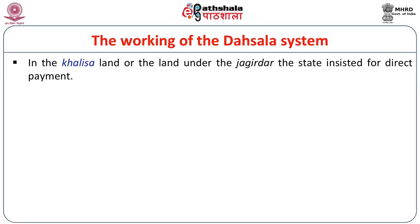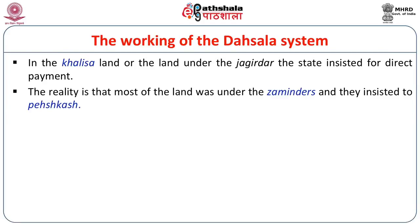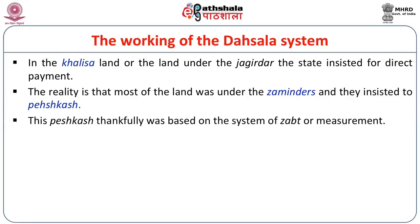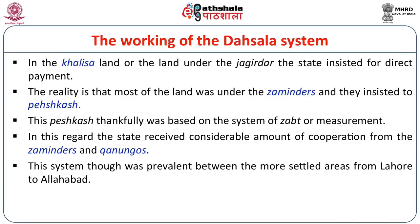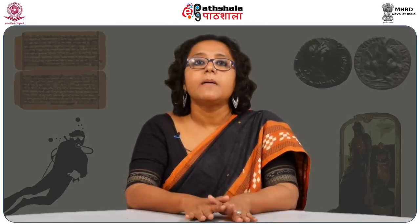In the Khalisa land or the land under the Jagirdar, the state insisted on direct payment. In reality, most of the land was under the zamindars and they insisted on paying Peshkash. The Peshkash was based on the system of zat or measurement during the time of Akbar. In this regard, the state received considerable cooperation from the zamindars and the Kanungos. This system was prevalent in the more settled areas from Lahore to Allahabad, and it was very difficult to bring peripheral areas — even places like Multan and Bengal — into this account.